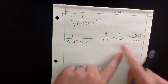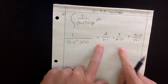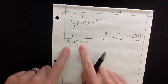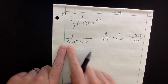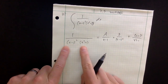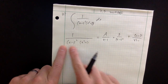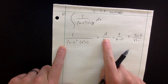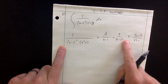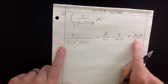The order doesn't matter, but it helps to think about the denominator: if I were to expand everything, I'd have a fourth-degree polynomial — x squared times x squared — so I need four variables to solve for: A, B, C, and D.